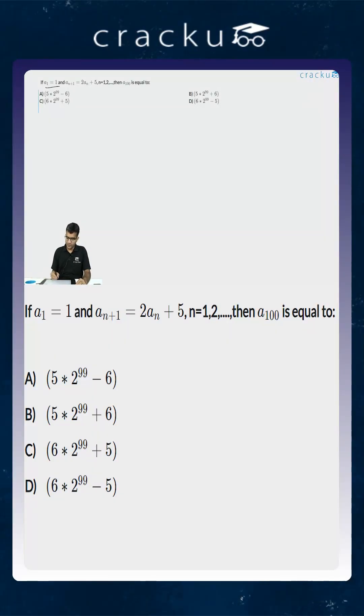We are told that A₁ is equal to 1. A_{n+1} is 2 times A_n plus 5. So what is the value of A₂?